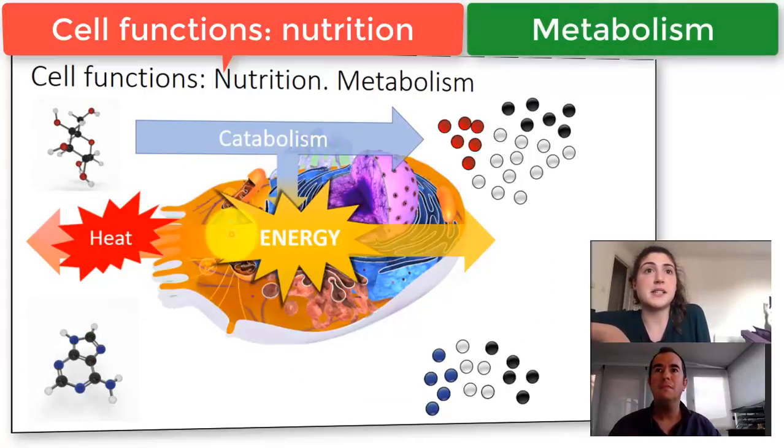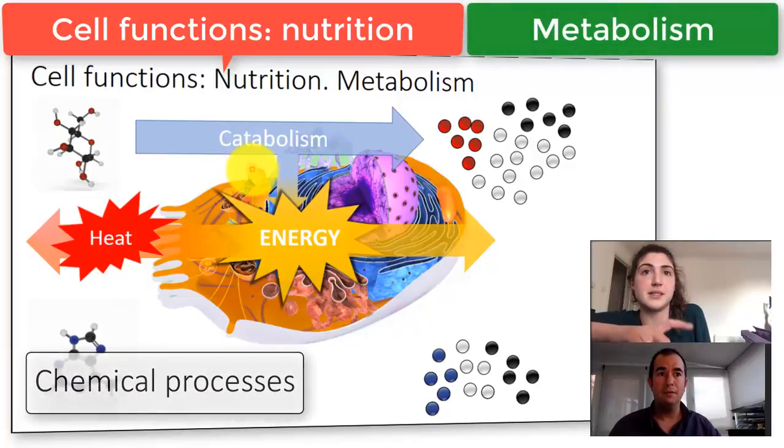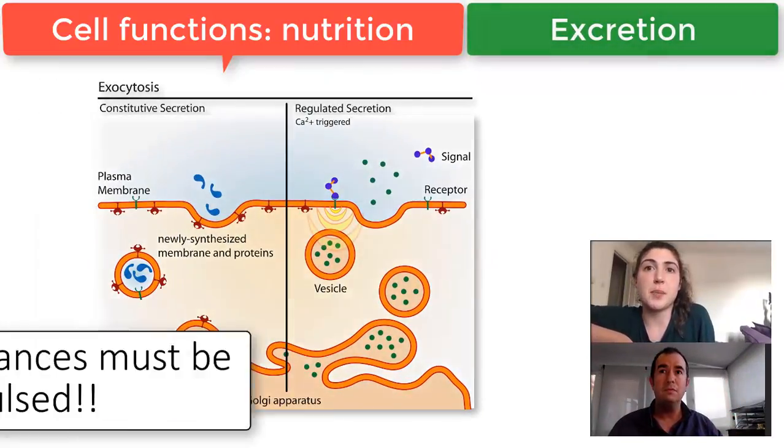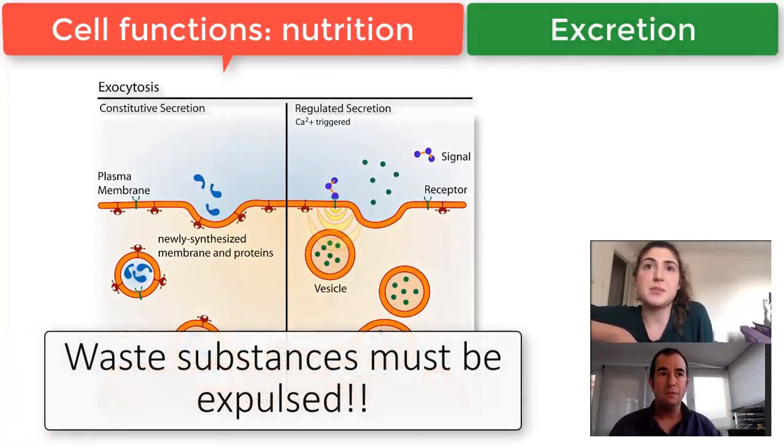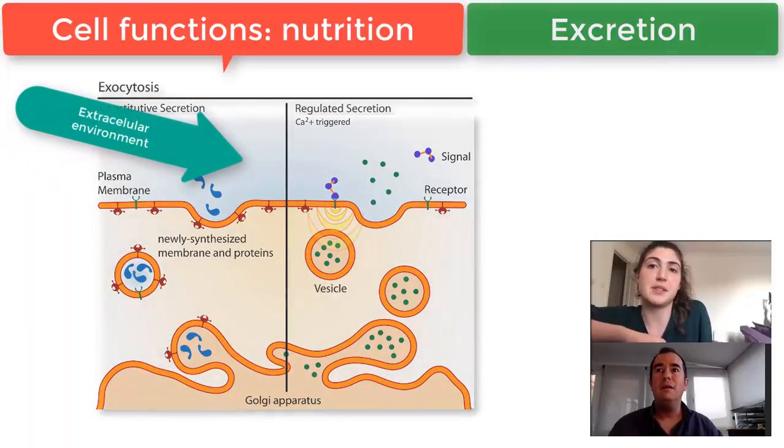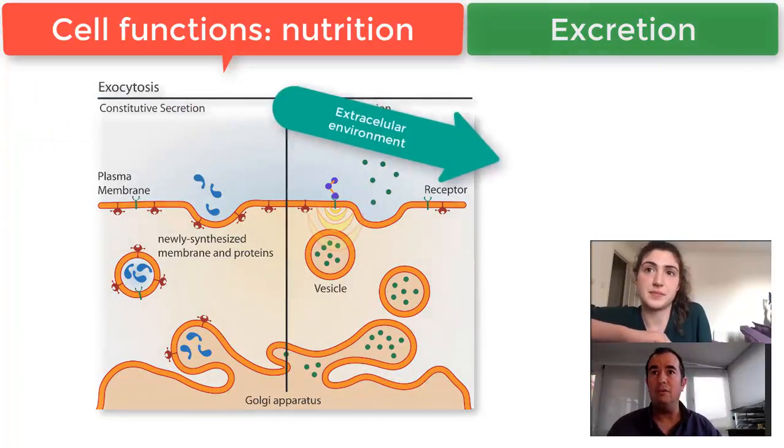Metabolism consists of the transformation of substances through chemical processes. After metabolism, waste substances are produced and they need to be expelled outside. So these cells are excreted into the extracellular environment.